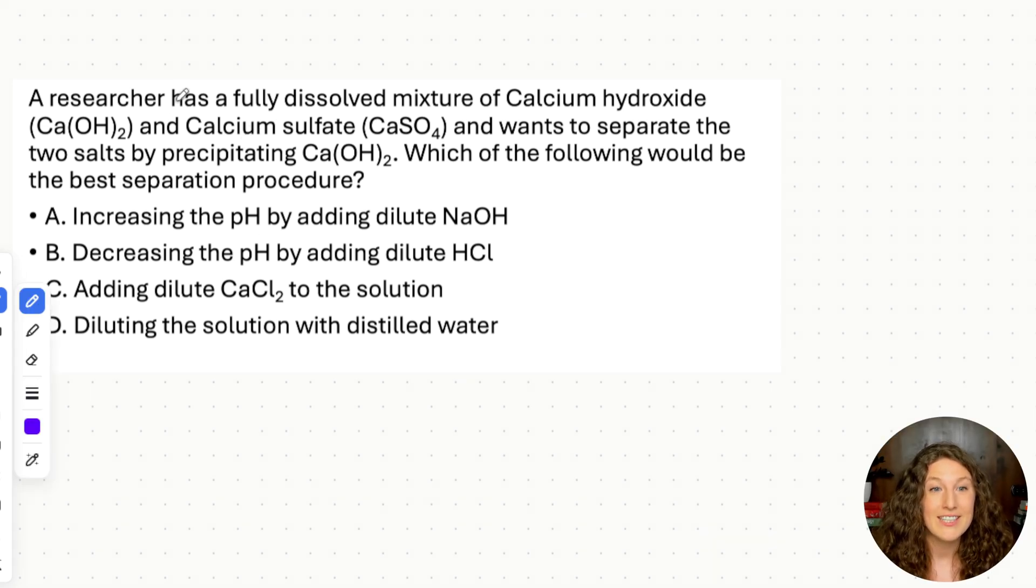Okay, so this problem states that a researcher has a fully dissolved mixture of calcium hydroxide, Ca(OH)2, and calcium sulfate, CaSO4, and wants to separate the two salts by precipitating the calcium hydroxide. So not only do they want to separate it, they want to separate it specifically by making the calcium hydroxide turn back into a solid. Which of the following would be the best separation procedure? Then we've got some funky things. We've got increasing and decreasing pH, adding dilute calcium chloride to the solution, and diluting the solution with distilled water. Before we do anything, my recommendation is to write out the dissolution reactions. Even if you think you know it, it just helps so much to visualize what's going on and what ions we're working with.